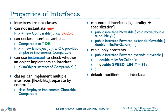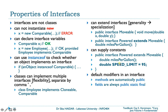For interfaces you can also supply constants. For example, we add to the Powered interface a constant SPEED_LIMIT of type double — and of course when we say constant it means public, static, and final. Regarding default modifiers: methods are automatically public if not specified, and fields are always public, static, and final. You cannot have instance fields inside an interface.